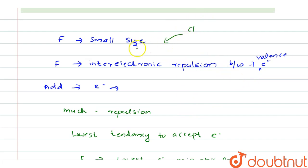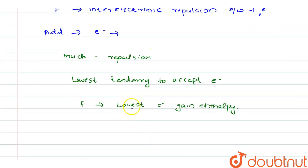To summarize: fluorine has a small size and faces inter-electronic repulsion between its seven valence electrons. When one more electron is added, much more repulsion occurs, so fluorine has the lowest tendency to accept electrons — and thus the lowest electron gain enthalpy compared to chlorine.